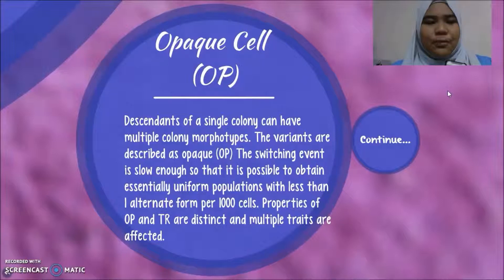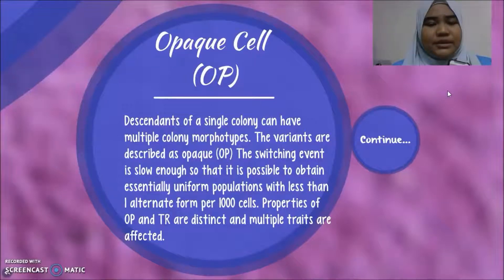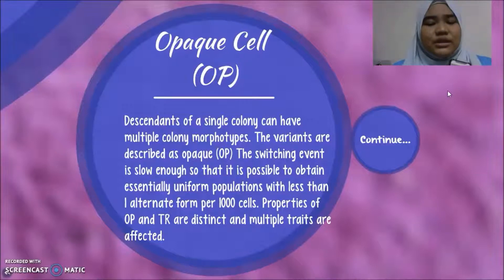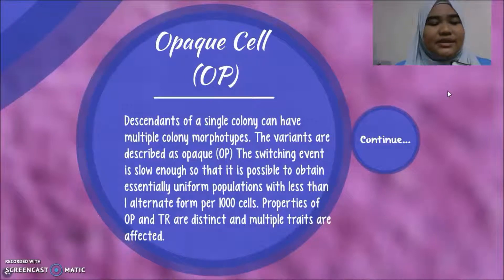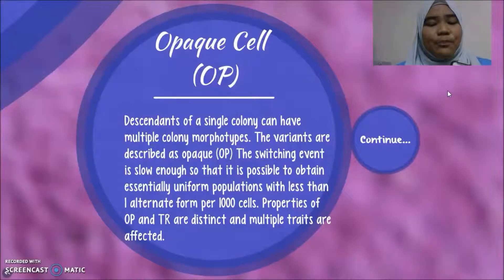Next is the OPaC cell. Descendants of a single colony can have multiple colony morphotypes. The variants are described as OPaC and TR. The switching event is low enough so that it is possible to obtain essentially uniform populations with less than one alternate form per thousand cells.